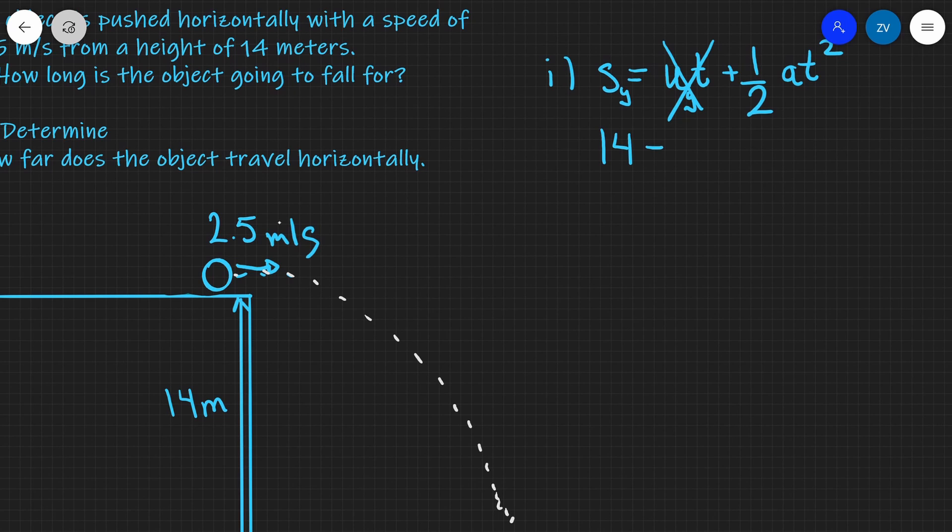In the vertical direction only of course, so it'll be 14 is going to equal a half. The acceleration due to gravity on earth is 9.81 multiplied by t squared.